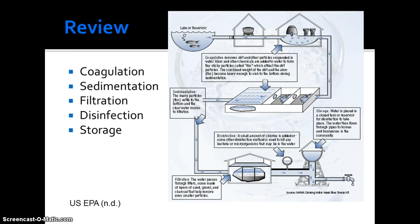An example from Austin Water Utility out of Texas shows that some 11 to 14 percent of water is lost annually between water that is treated and water that is delivered. As a quick review, the five typical steps in drinking water treatment, as depicted in this graphic, are coagulation, sedimentation, filtration, disinfection, and storage. Pre-treatment and distribution are also important aspects of drinking water treatment and availability.